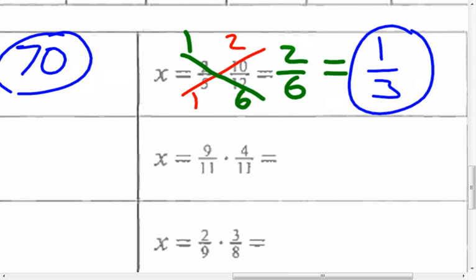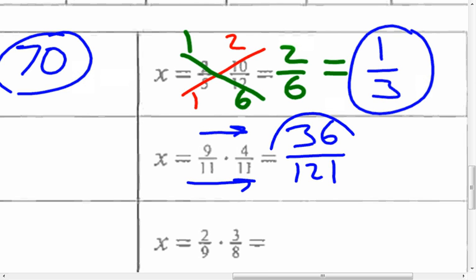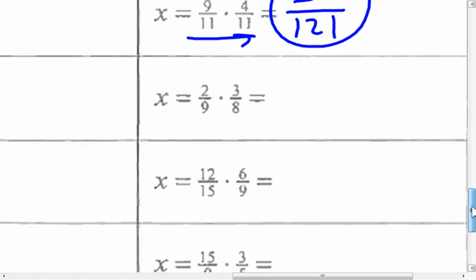Now on the next one, is there anything I can reduce, cross-cancel? Cross-reduce. Nothing, nothing. So I'm just going to go straight across. So 9 times 4 is... And 11 times 11... That's it. If it cannot be reduced before, it cannot be reduced now. Okay, and then you can finish the others.